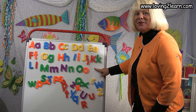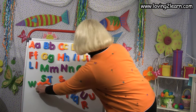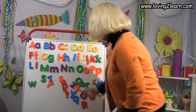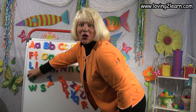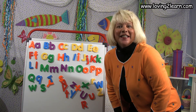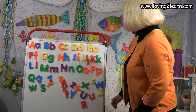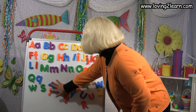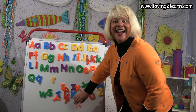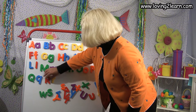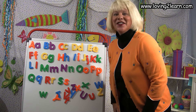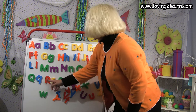What letter comes next? P. Here's the capital P and the small p. Then comes Q. Here's that capital Q and the small q. Then what letter comes next? R. Good job. Here we have the small r and the capital R. We have the capital S and the small s. Good job. Q, R, S.